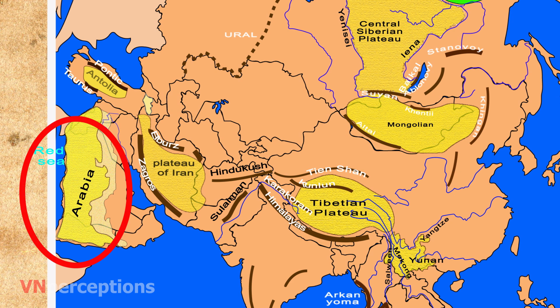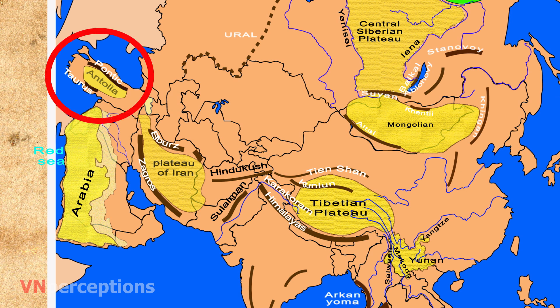Next comes the Plateau of Arabia. It rises steeply along the Red Sea coast and slopes eastward towards the Persian Gulf in a dry desert region. Next is the Anatolian Plateau. It is the central upland region of the ancient region of Anatolia, which is today's Turkey. The plateau is hemmed in by two parallel mountain ranges: the Taurus to the south along the Mediterranean coast, and the Pontic Mountains to the north along the coast of the Black Sea.